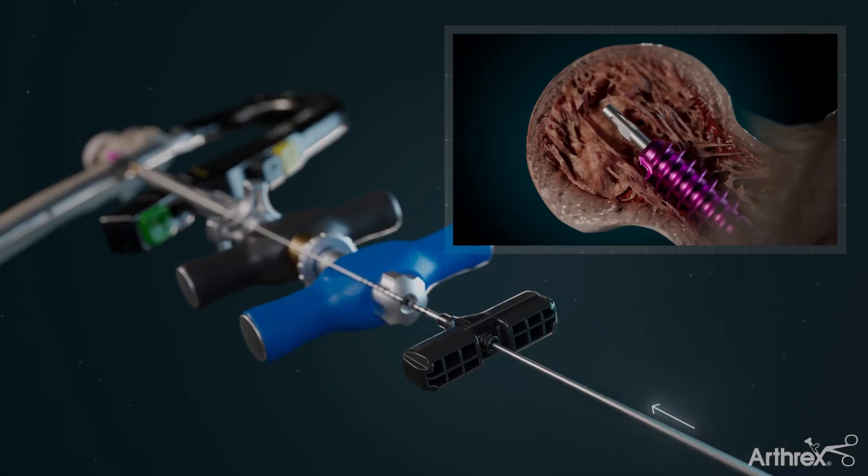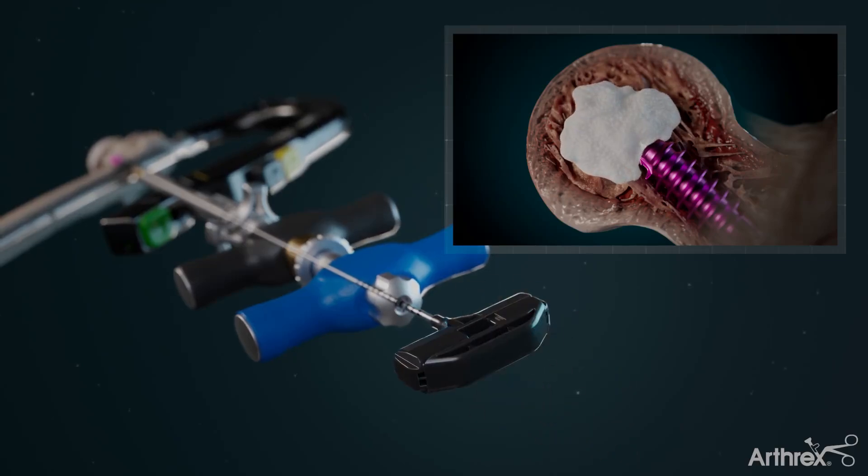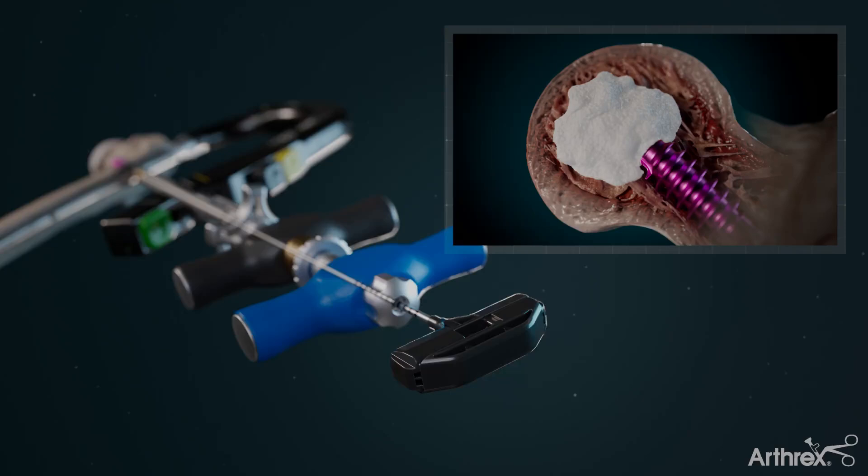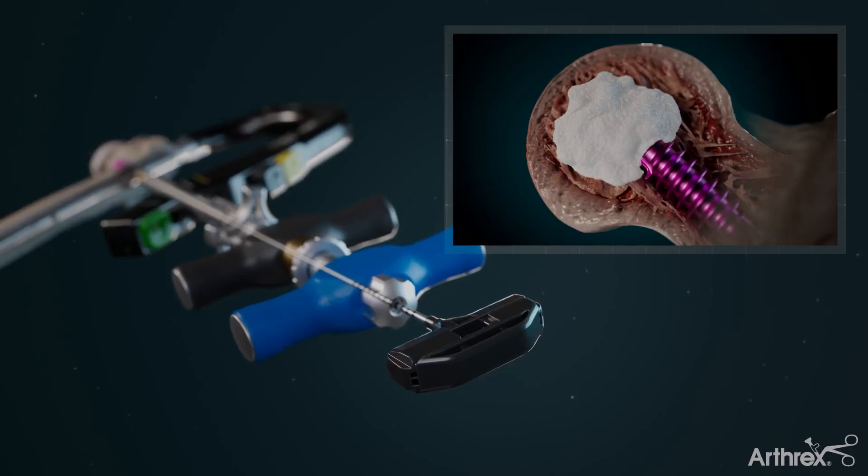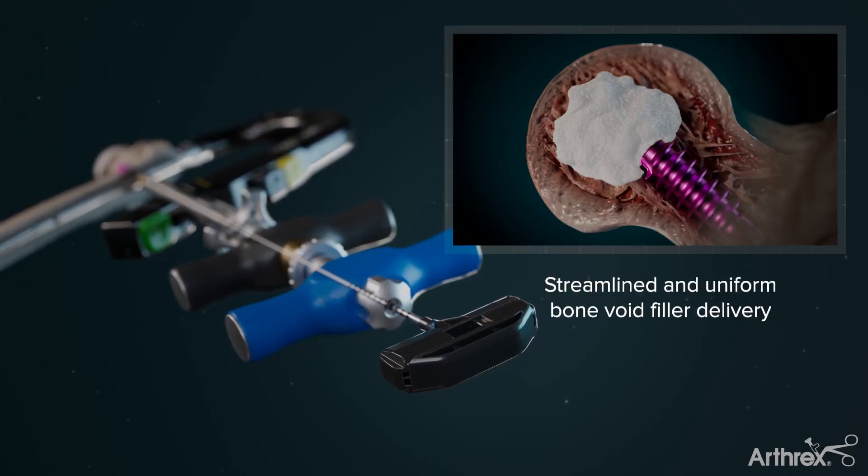Under fluoroscopic guidance, carefully insert the inner trocar, advancing graft material into the femoral head. The Arthrix augmentation system allows a uniform distribution of graft material by delivering the graft before final screw placement.